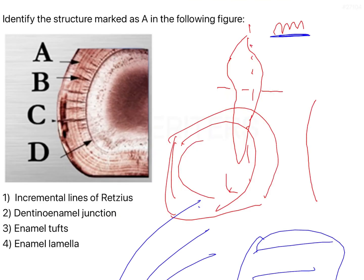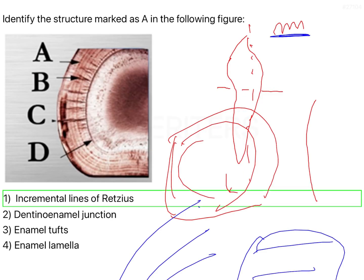but your incremental lines of Retzius. B is your enamel tuft, C is an enamel lamella, and D is dentinoenamel junction.